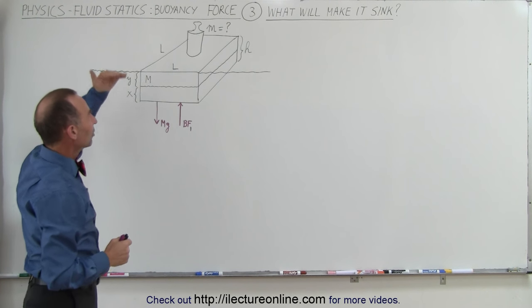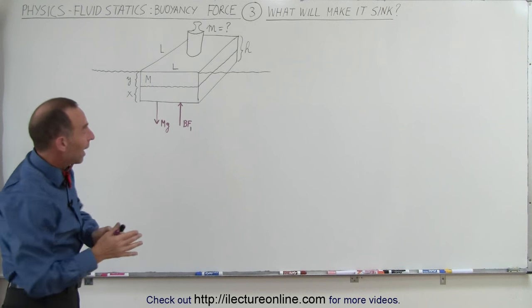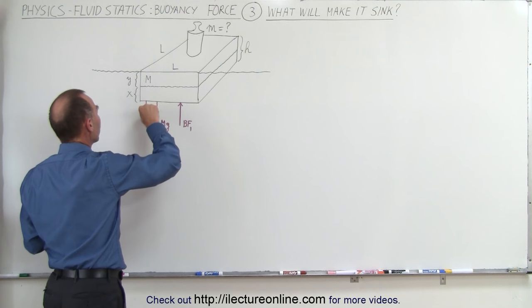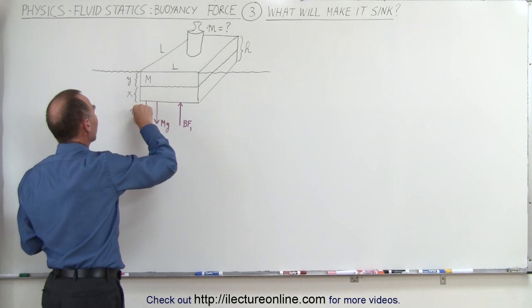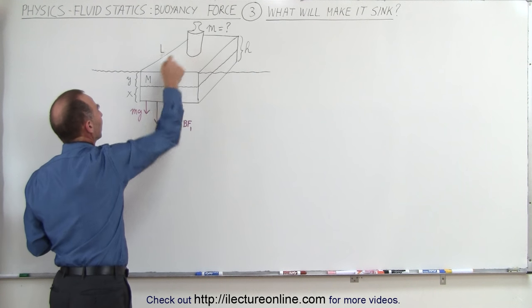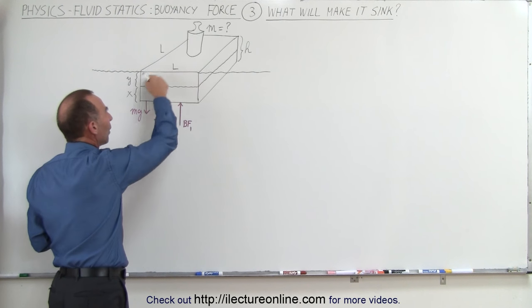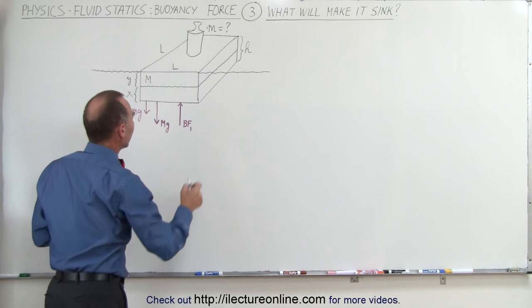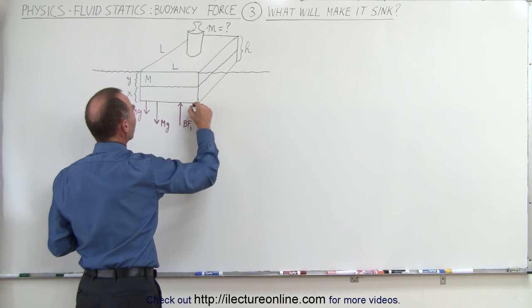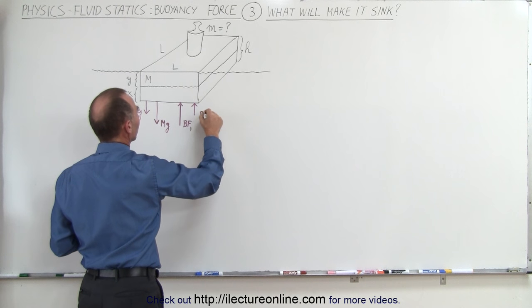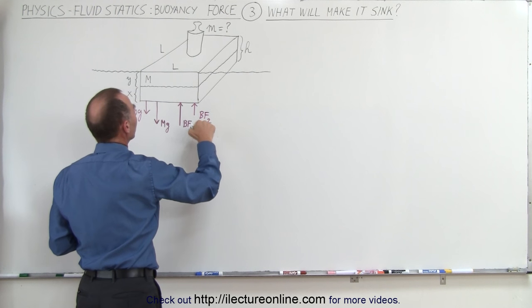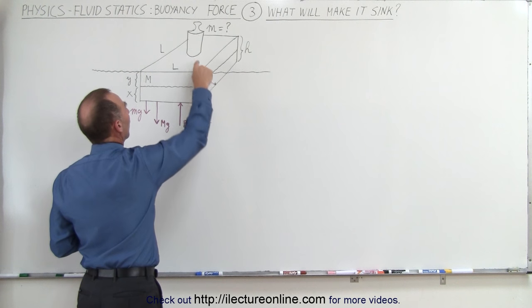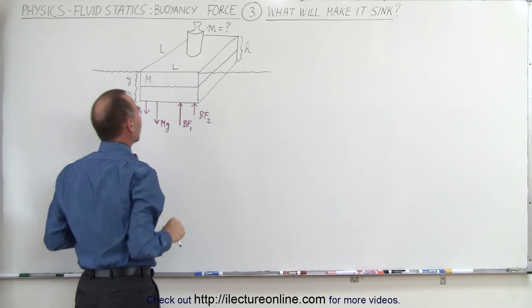Now when you place an additional object on top, you're going to have an additional weight pushing down. Let's call this little mg for the weight on top. Big mg is the weight of the block in the water. So you're going to need an additional buoyancy force to balance that out — let's call that BF2. This is the buoyancy force required to keep the system afloat.